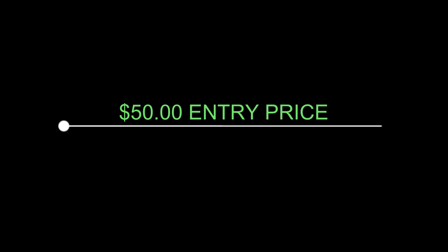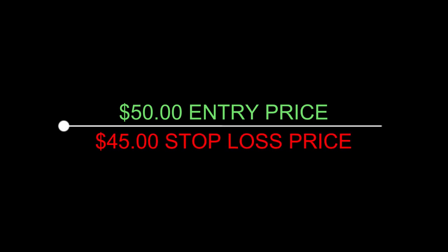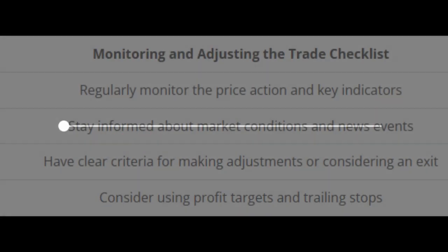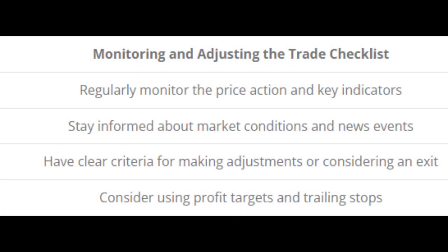With a stop loss at $45 and a target price of $60, the potential risk is $5 — the difference between your entry price and the stop loss. The potential reward is $10, the difference between the target price and your entry price, giving you a reward-to-risk ratio of 1 to 2. Once you enter a trade based on this confluence, your work is not done.